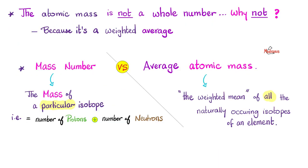So why is the atomic mass not a whole number? Because it's a weighted average. Is there a difference between mass number and the average atomic mass? Yes, indeed. The mass number is the mass of a particular isotope — just one, like carbon-12. That's the number of protons plus the number of neutrons of that specific isotope. But the average atomic mass is the weighted average of all the naturally occurring isotopes of an element — carbon-12, carbon-13, and carbon-14. That's your average atomic mass in AMU.